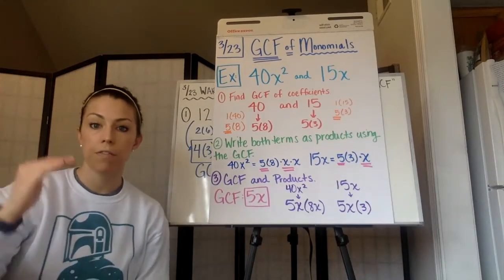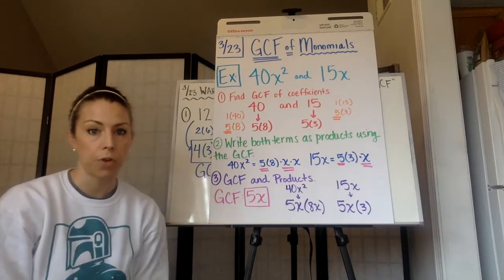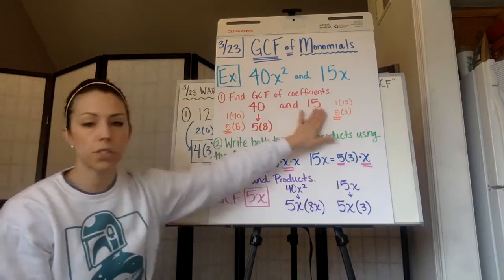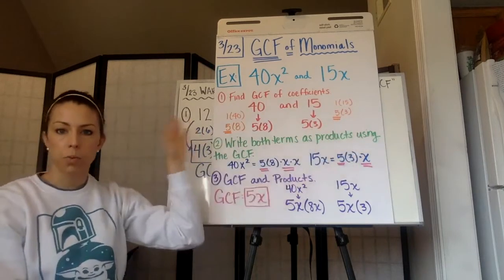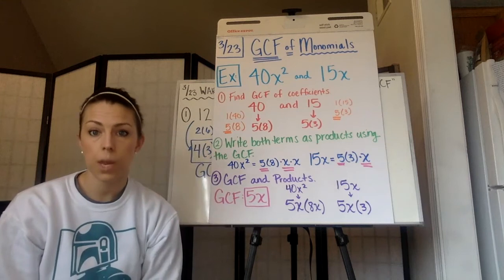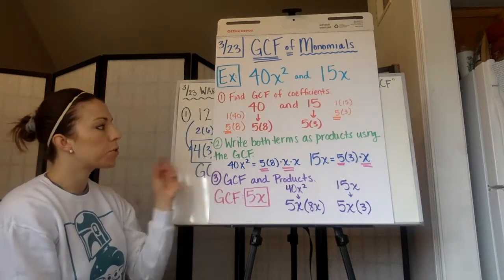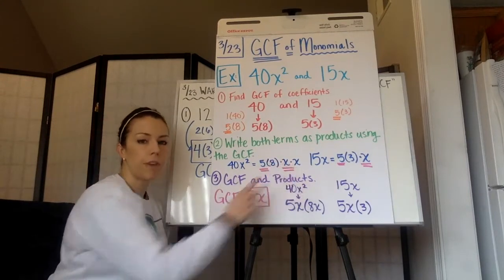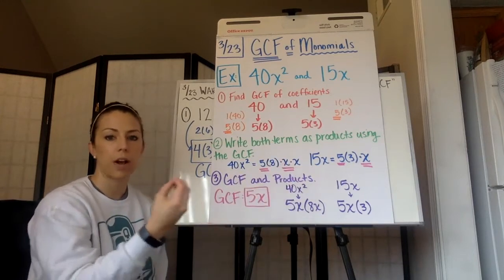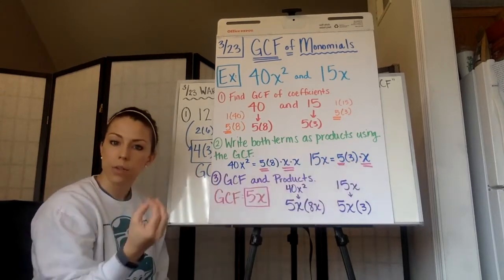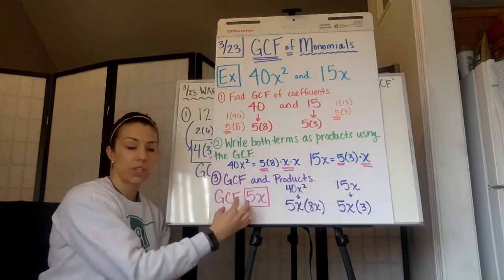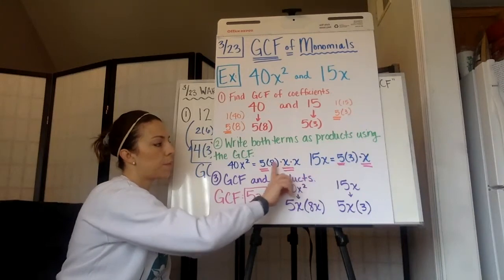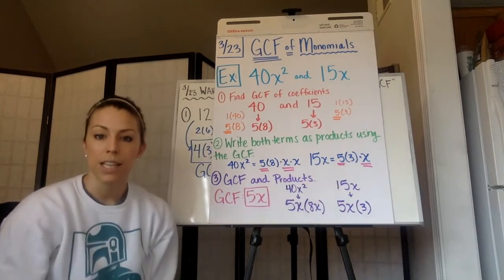Let's go through the three steps one more time. We were given two monomials. Step one: find the GCF of the coefficients by starting with the smaller number, listing its factors, and checking which ones also go into the larger number. Step two: write both terms as products using the GCF, including factoring out the variables — x squared becomes x times x. Step three: identify the GCF with variables and write both terms as products. In this case, GCF was 5x, leaving 8x and 3.